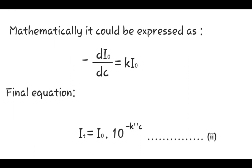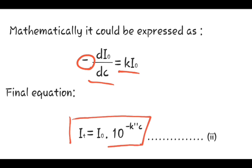Mathematically, Beer's Law can be expressed as: the decrease in the rate of intensity with respect to the concentration is directly proportional to the incident radiation. Here, K is the proportionality constant and the negative sign indicates the decrease in the rate. After performing several mathematical operations, the final equation is: I_T is equal to I₀ into 10 raised to minus K'C.